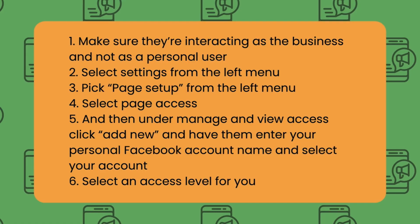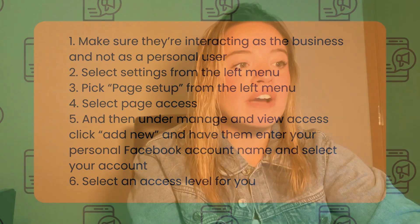Here are the steps to help you: First, make sure you're interacting as a business and not your personal user, then click your profile and select the business you want to add. Then select Settings from the left menu. Three, pick the Page from the left menu. Four, select Page Access. Five, under Manage, click View Access and click Add New, then enter your personal Facebook account name, select your account, and finally select your access level. This is great if you have a big team and want to control what they can do.